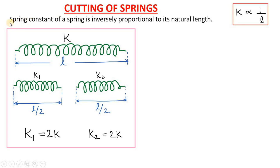The most important concept related to the cutting of springs is that spring constant of a spring is inversely proportional to its natural length. K is inversely proportional to the natural length of the spring.